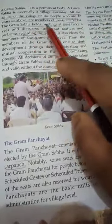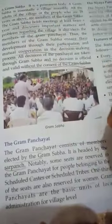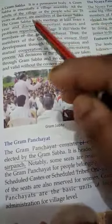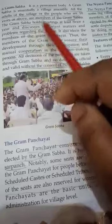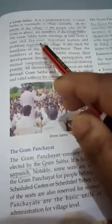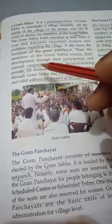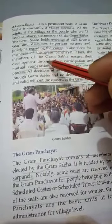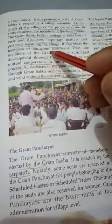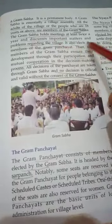The Gram Sabha holds meetings at least twice a year. Two times in a year they hold a meeting, and what do they do? They discuss the important matters and problems regarding the village — any problem or issue they want to sort out related to the village.